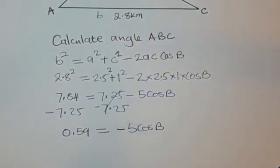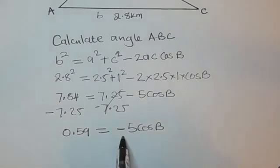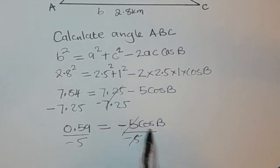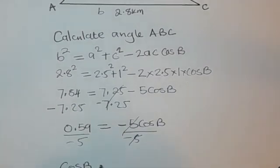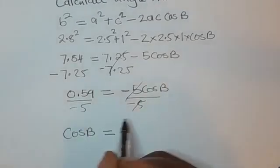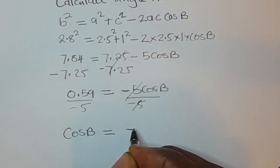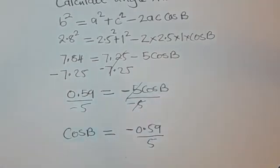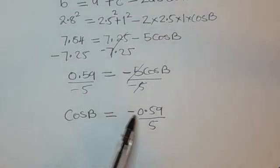To remain with cos B, we divide both sides by negative 5. So cos B equals 0.59 divided by negative 5, which gives cos B equals negative 0.59 over 5.